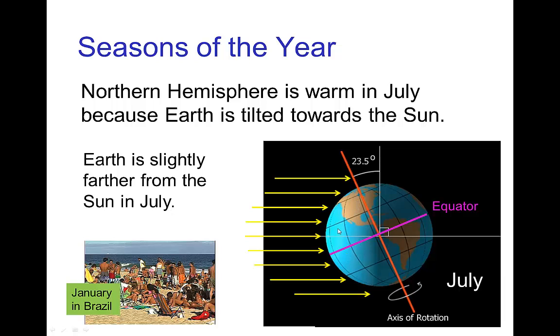So it's warm in July in the northern hemisphere, since the Earth is tilted towards the sun, and it's cooler in July in the southern hemisphere, and vice versa. So it's nice and warm in the southern hemisphere in January.